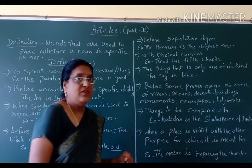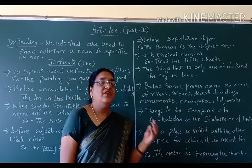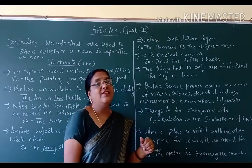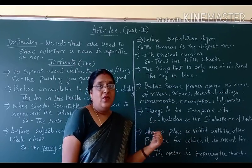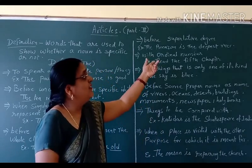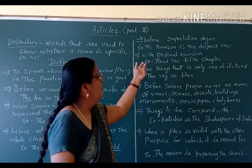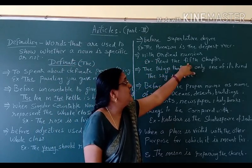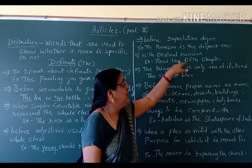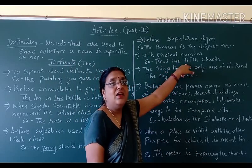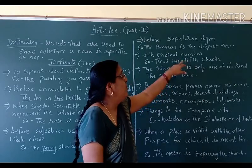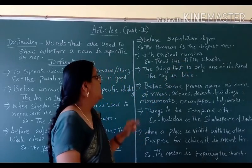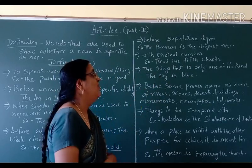With ordinal numbers — ordinal numbers means first, second, third, fourth — these are known as ordinal numbers. Example: 'Read the fifth chapter.' The fifth is the ordinal number, so before an ordinal number the article 'the' is used.